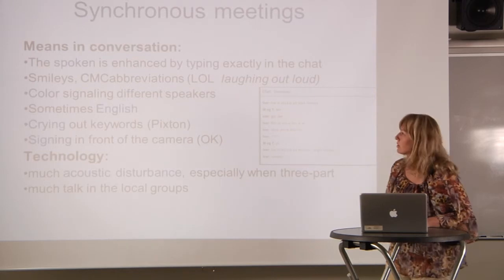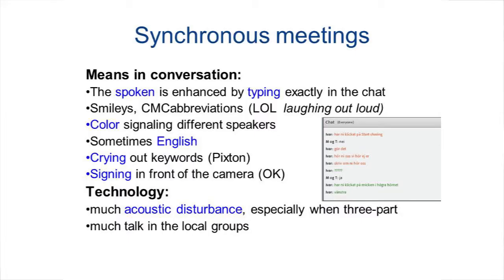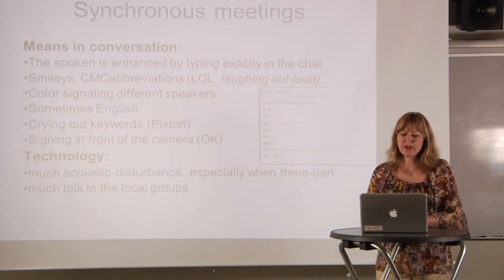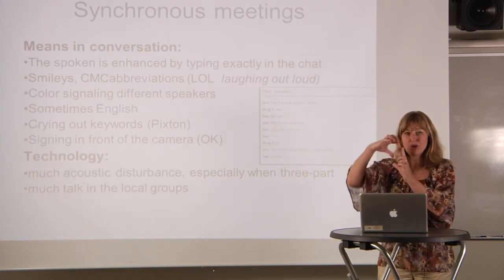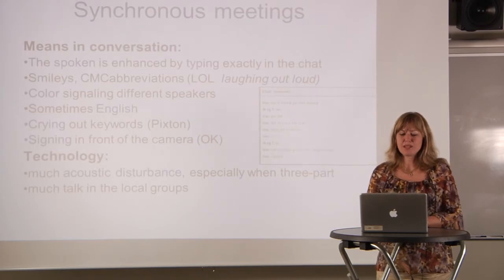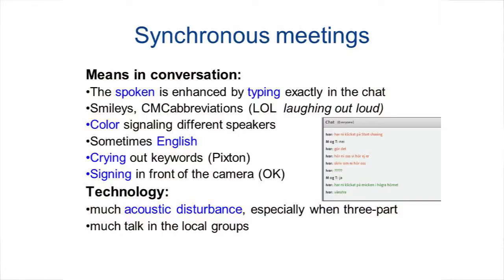The analysis of the synchronous meeting shows that the spoken is often enhanced by typing exactly in the chat what is being said. Sometimes English is used. They could also cry out keywords. Occasionally they even sign in front of the camera. They use smileys and other CMC abbreviations such as 'lol' — laughing out loud — and they use colors in the chat signaling the different speakers. Most of the time in the conversation is dedicated to solving the technical problems and also clarifying who the addressee is. The three-part communication is challenging technically in this synchronous form — just for all three parties to be in place at the same time, and managing the camera and sound.